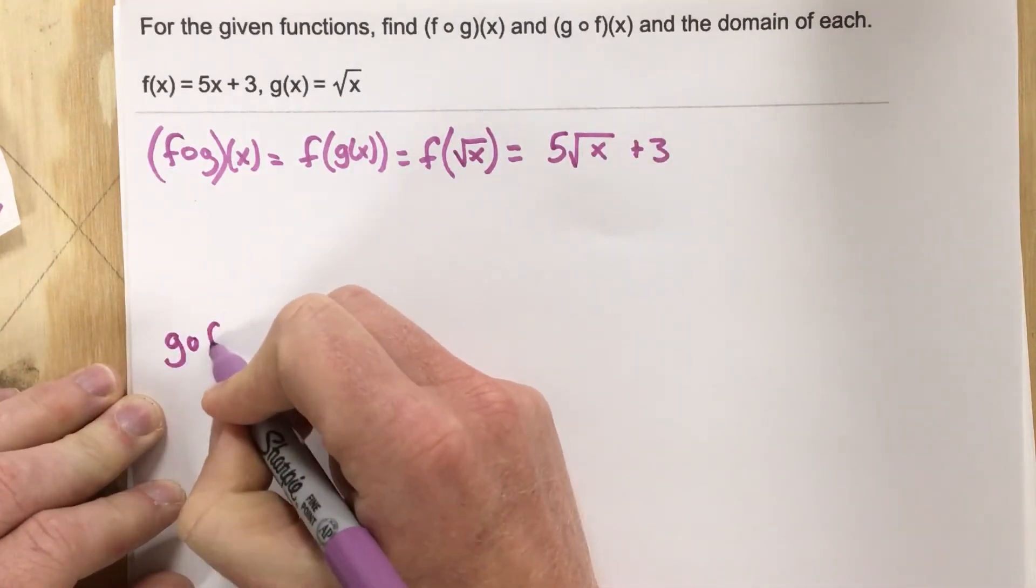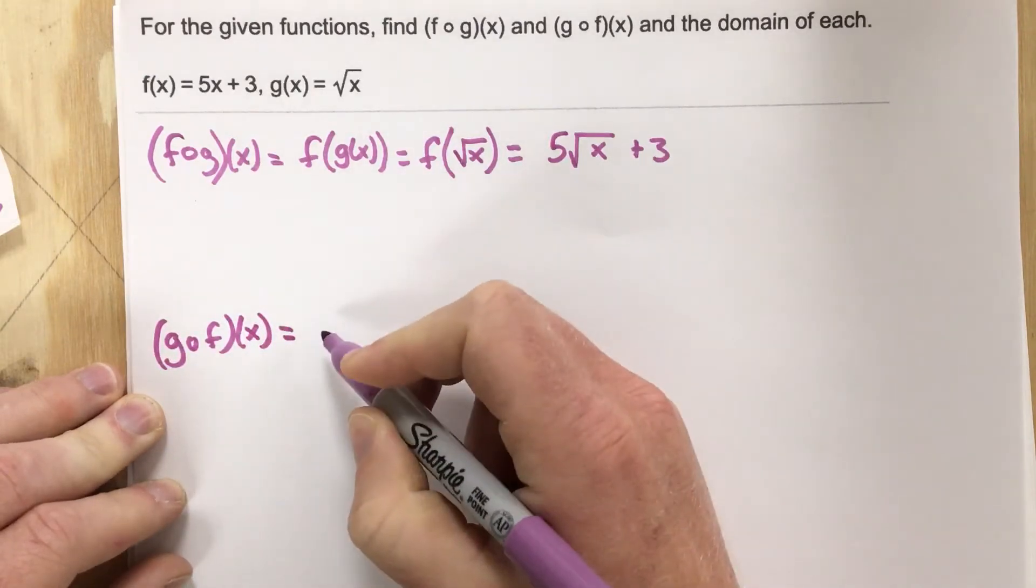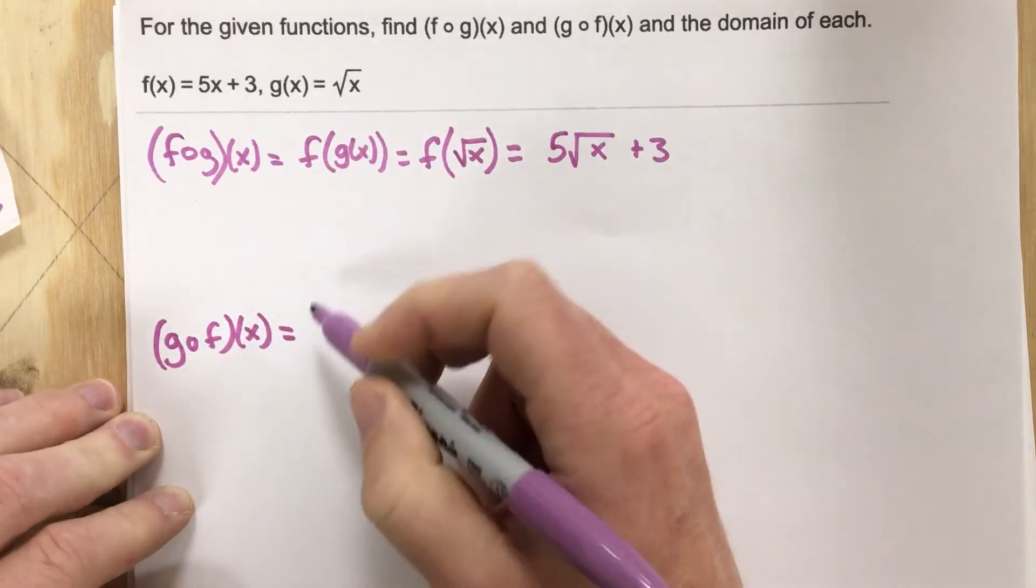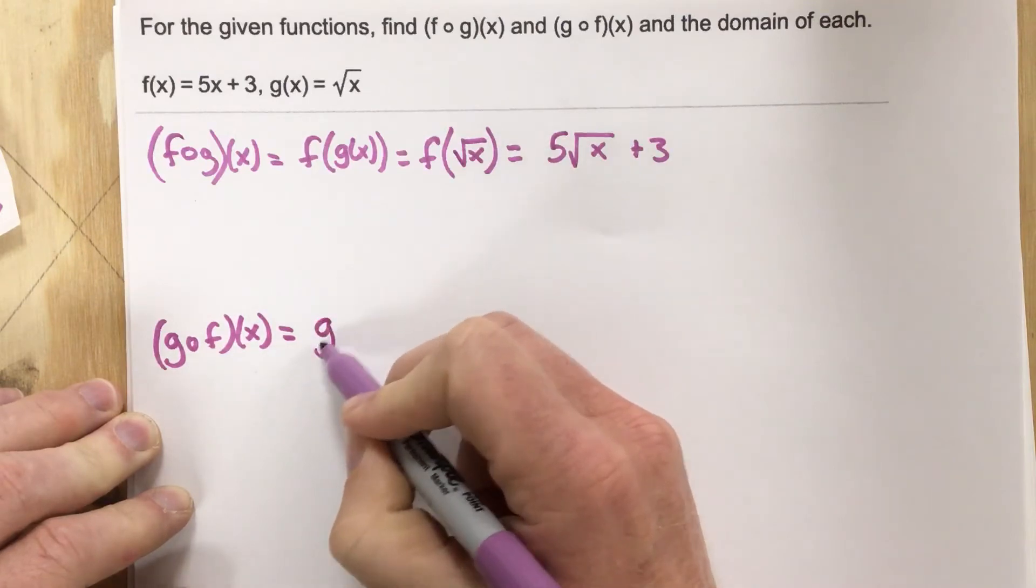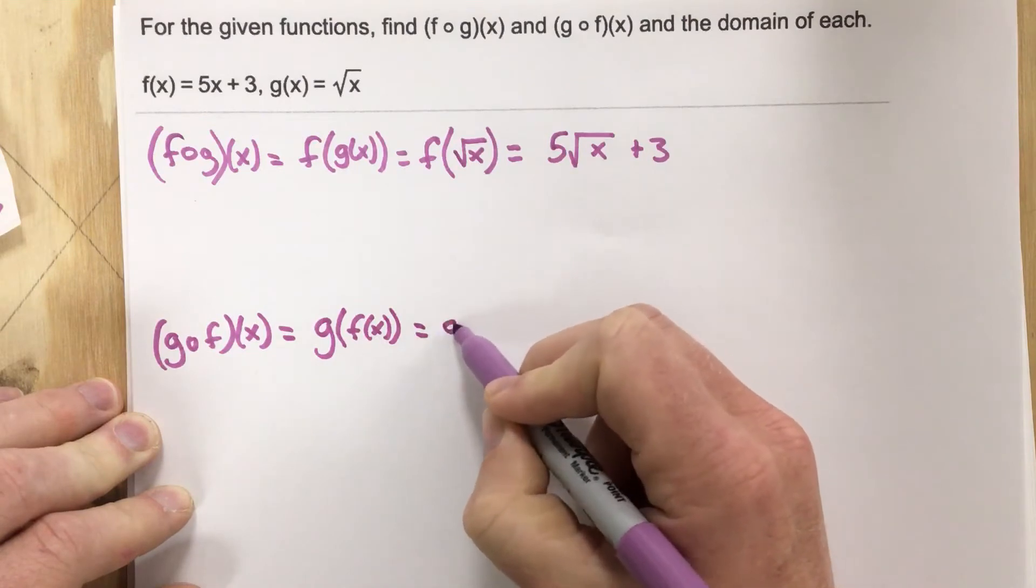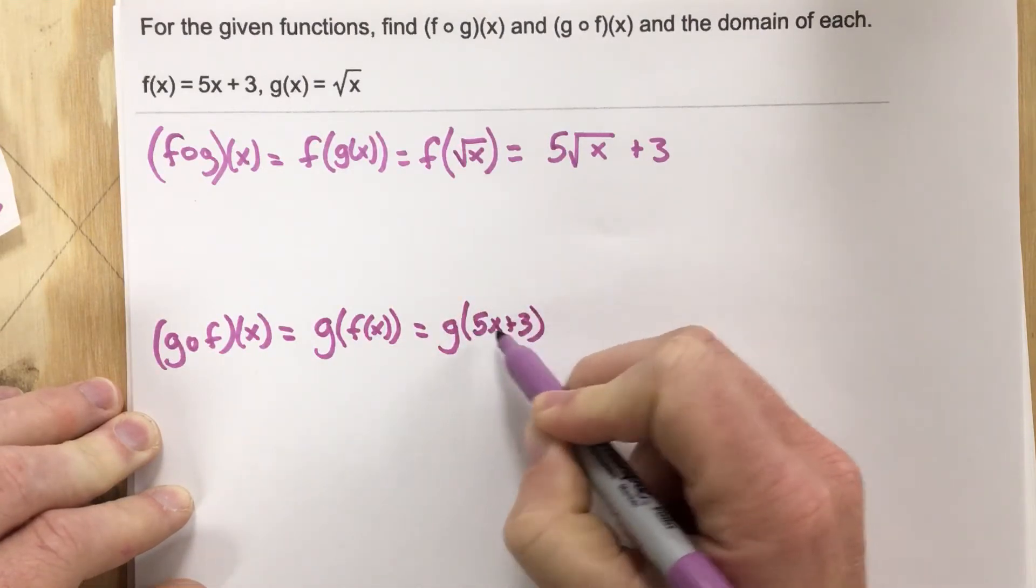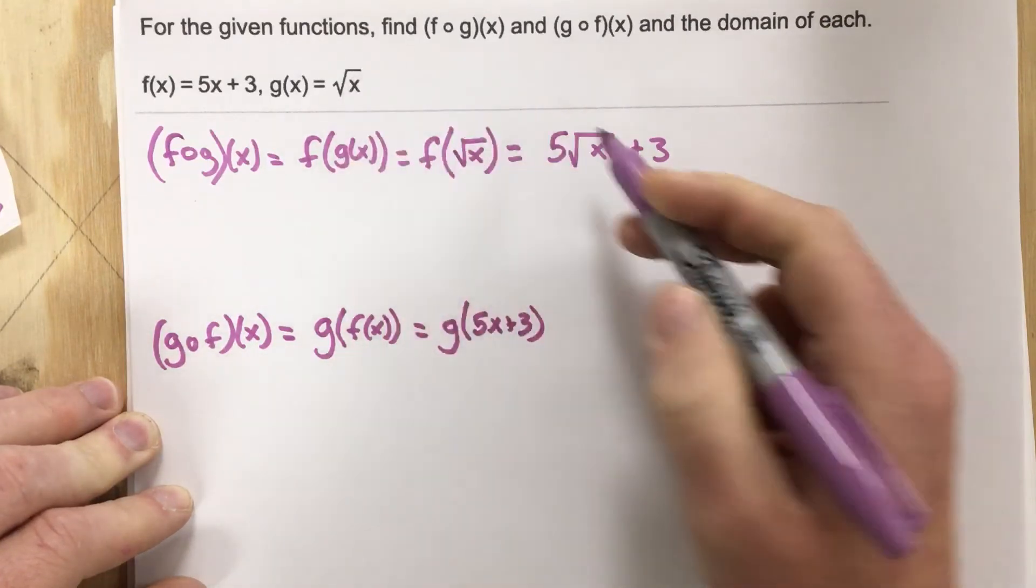Now let's do g of f of x. When I do g of f of x, I get g with an input of f of x, and f of x is 5x plus 3.